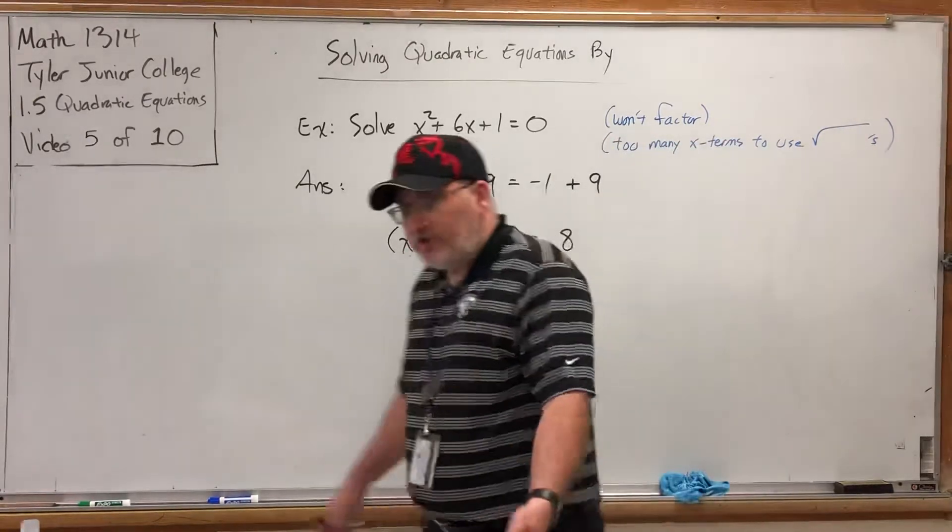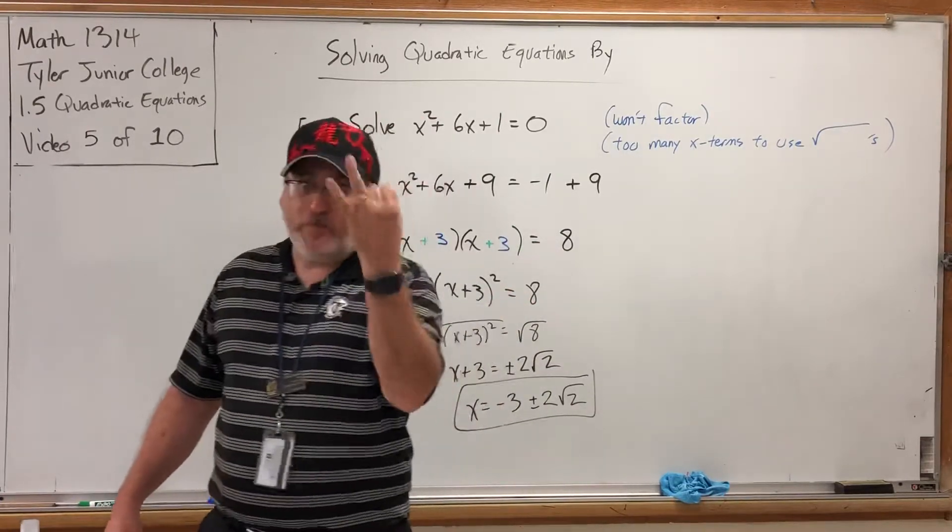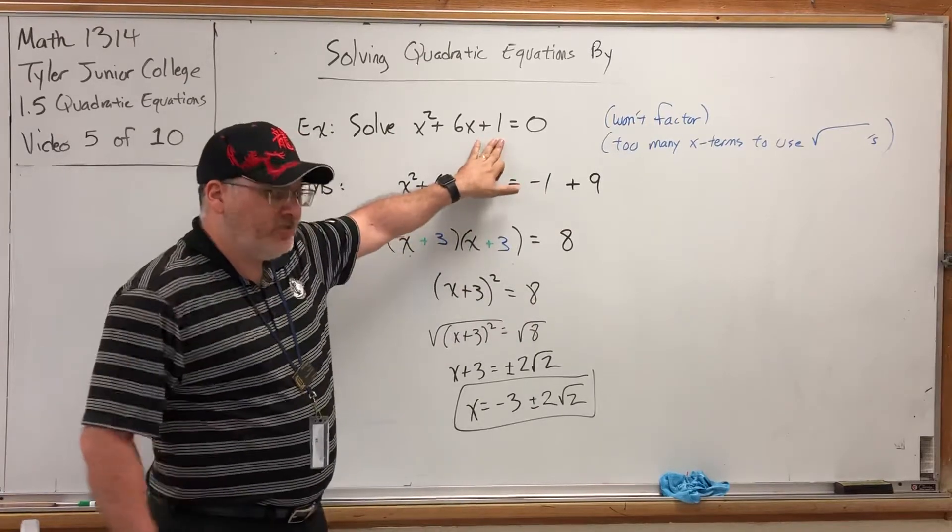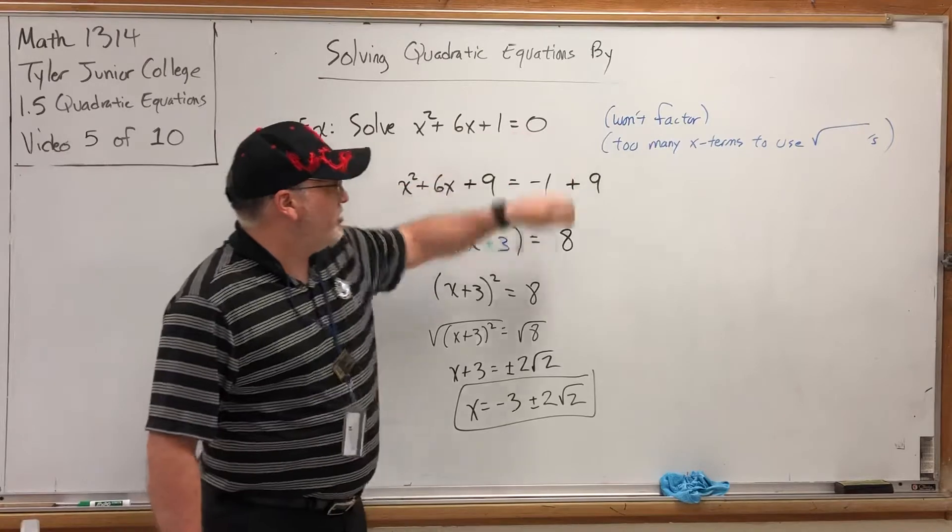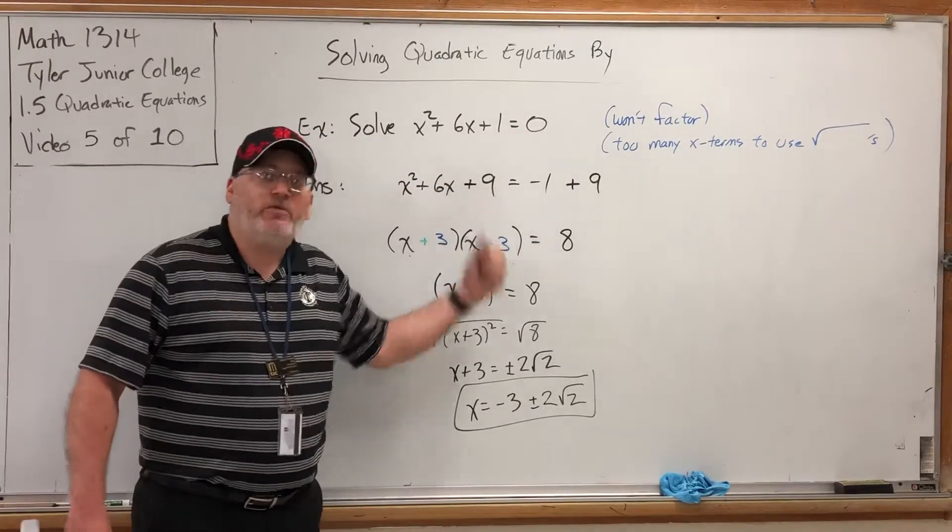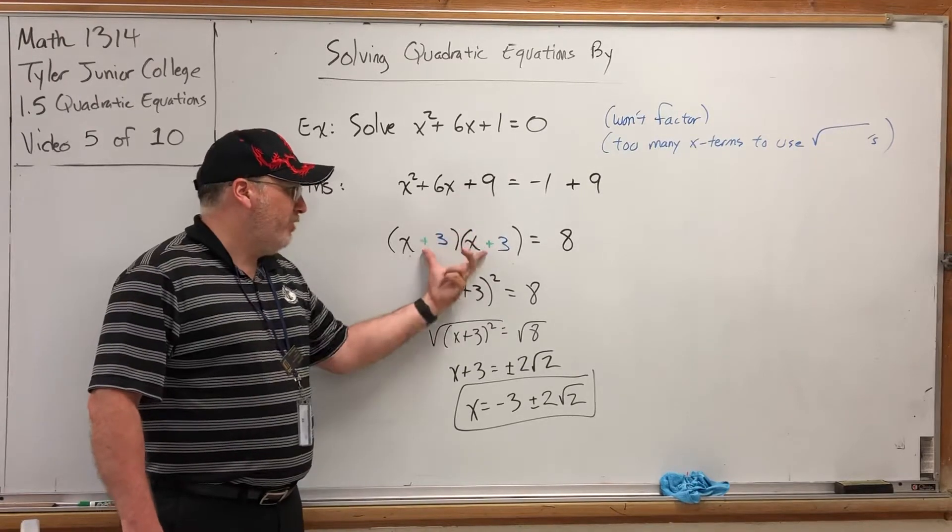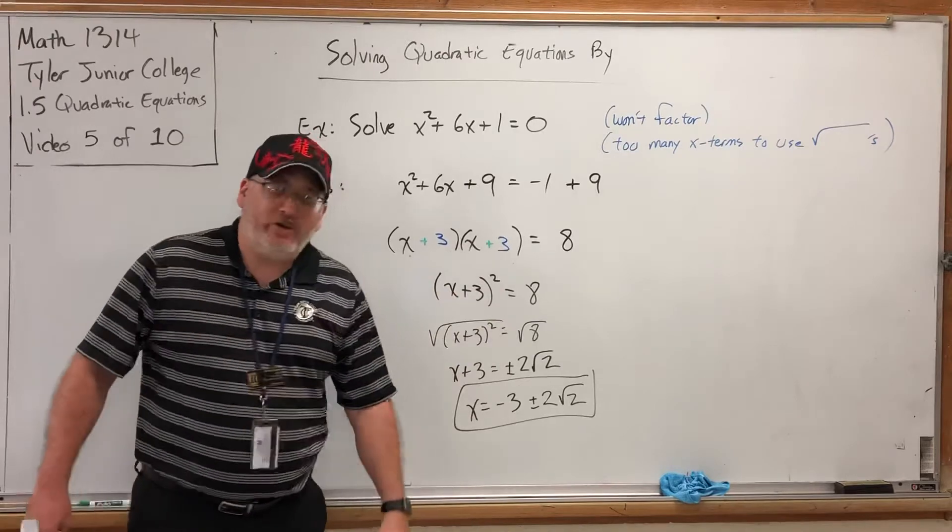What happened was we took a quadratic equation with two x terms and a third constant term. The term without an x, the term that's just a number, is called the constant term. We move the constant term to the other side to make room for a better constant term. That better constant term caused this trinomial to not only factor, but factor into the same thing twice, setting it up so that we could use square roots.